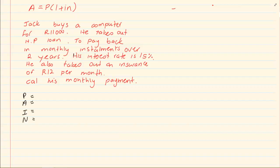When we have an HP we usually look to see is there a deposit because sometimes in an HP they will say the person had to pay a deposit of so much. In this case there is no deposit. So we continue to read. They say that he buys the computer for 11,000 Rand. Now 11,000 Rand is our P. It is what he is starting off with.